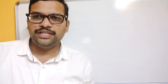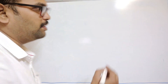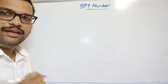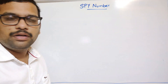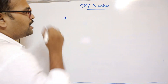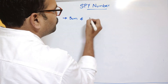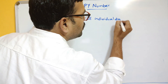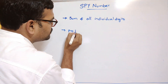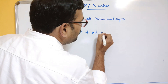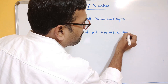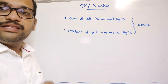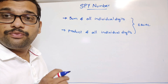Hello friends, welcome back to our channel. In today's session we'll find the logic for a spy number. If you consider any number, how can we find that the number is a spy number or not? In order to find that — a spy number is one where the sum of all individual digits and the product of all individual digits are equal.